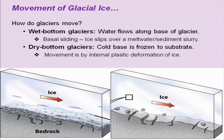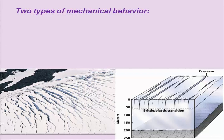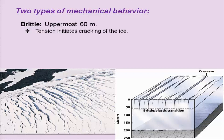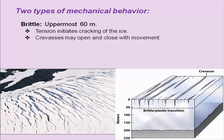This is the major difference between wet bottom and dry bottom glaciers. In a wet bottom glacier the basal portion slides, whereas in a dry bottom glacier the basal part cannot slip but movement takes place because of internal deformation in the ice. The type of mechanical behaviors: one is plastic/internal deformation with dry bottom glacier, another is wet bottom glacier. In the upper part, ice is brittle up to 60 meters — tensional cracks form, crevices may open and close with movement. Below that is the plastic zone.